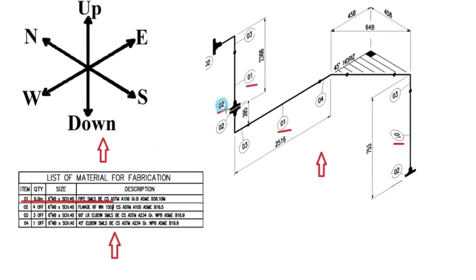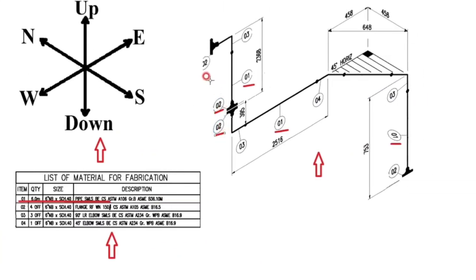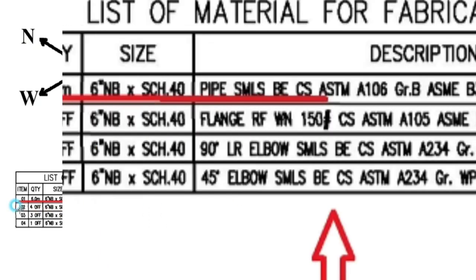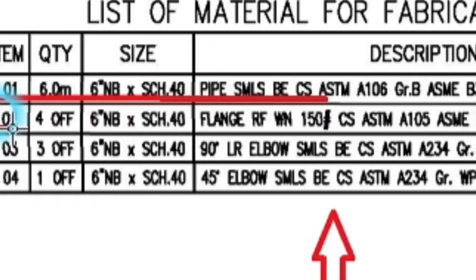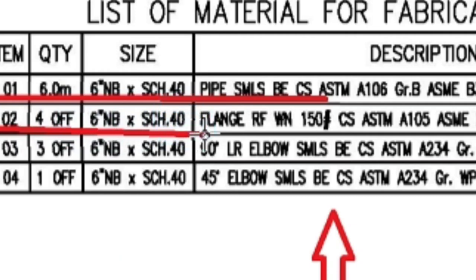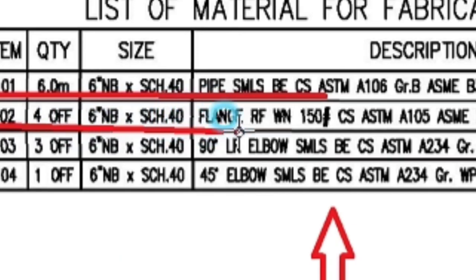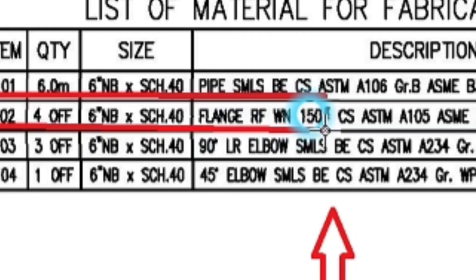Detail number 2 was used in 4 places in the pipe drawing. Looking at the material list, detail number 2 has a quantity of 4 pieces: 6-inch schedule 40 flange, raised face, weld neck, 150 class. The material is carbon steel.